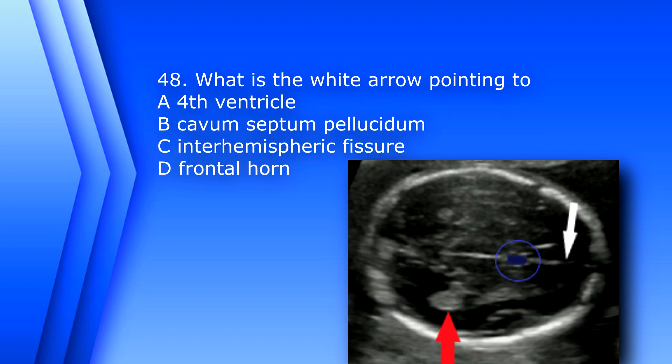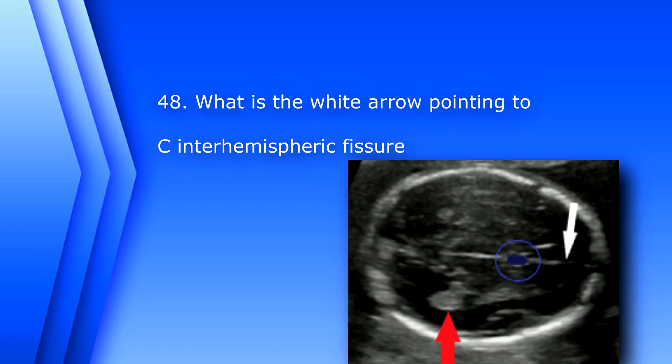Question 48: What is the white arrow pointing to? A) fourth ventricle, B) cavum septum pellucidum, C) interhemispheric fissure, or D) frontal horn. The answer is C, interhemispheric fissure.